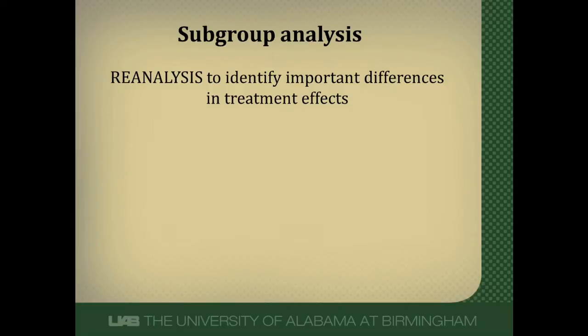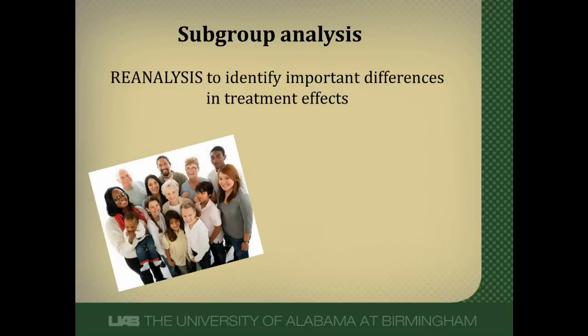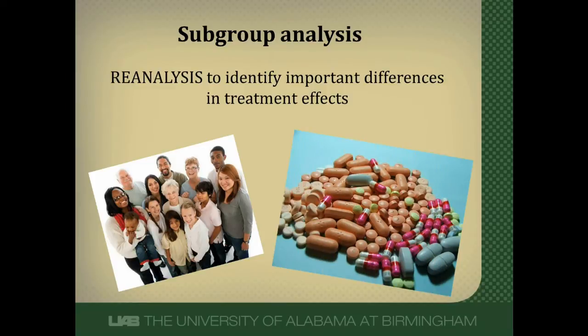Subgroups can be constructed on a variety of factors. The most common are various patient characteristics — you may want to compare effects in the old versus young, one ethnic group versus another, patients with diabetes versus those without diabetes, et cetera. You can also develop subgroups across treatments, comparing a high dose versus a low dose, IV versus oral, or different drugs in the same class.